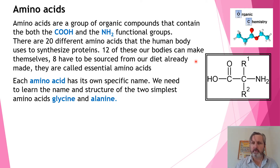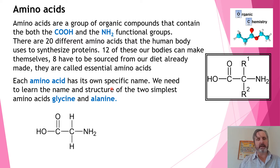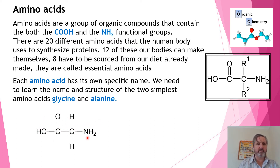Each one has its own name. We could give it a systematic name, but we have two specific names for the simplest ones. The simplest one is called glycine, and the second simplest is alanine. Glycine has two carbons in a chain, so it's ethanoic acid — making it two-aminoethanoic acid — but it's commonly just called glycine.